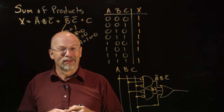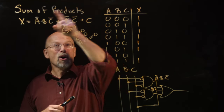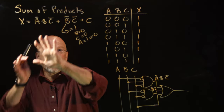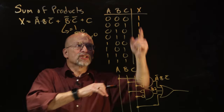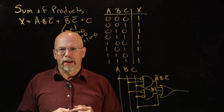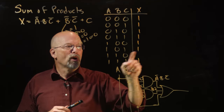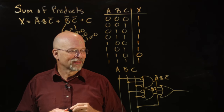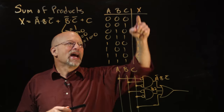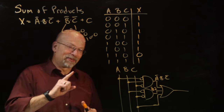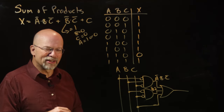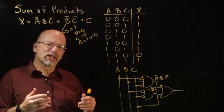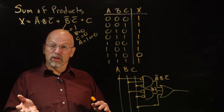That's a truth table full of a lot of 1s. But the goal was to show how to get a sum of products expression into a truth table format. There's only one place where we're outputting a 0, so this complicated circuit actually outputs a rather simple truth table. In the next lesson we're going to focus on sums instead of products.